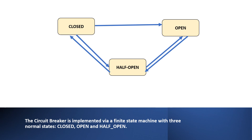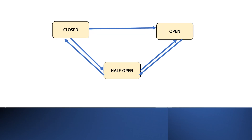Now let's see how we can use it. The circuit breaker is implemented via a finite state machine with three normal states: closed, open, and half-open. If the communication between services is fine, indicating the absence of any issues, the circuit breaker will be in a closed state. In this state, the communication flows as usual.